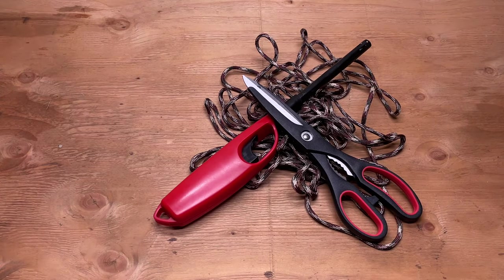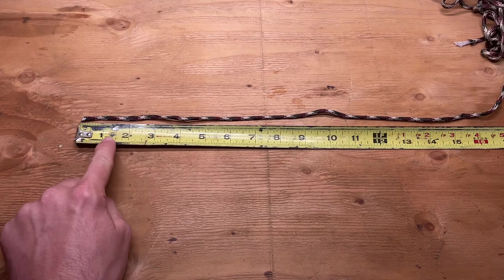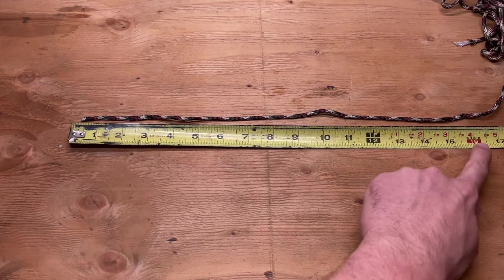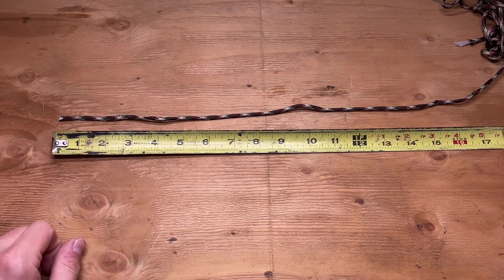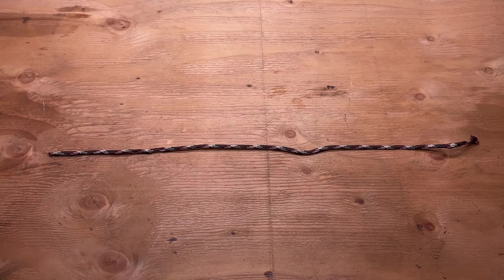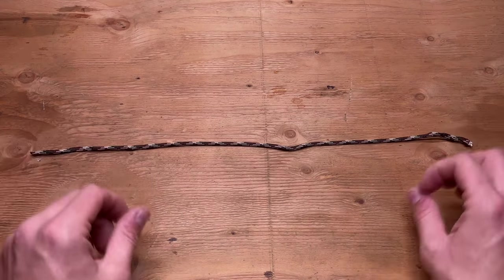Now you're going to measure a piece of paracord that is 17 inches in length and you're going to cut it there just like that. Basically what we are going to be doing is we're going to be making a loop.